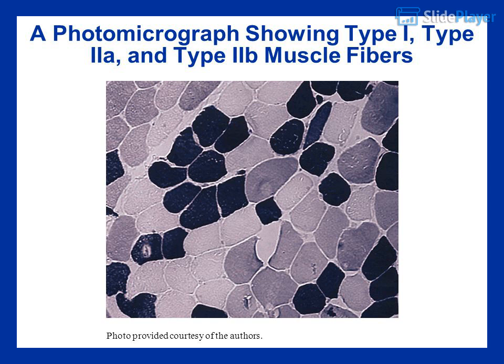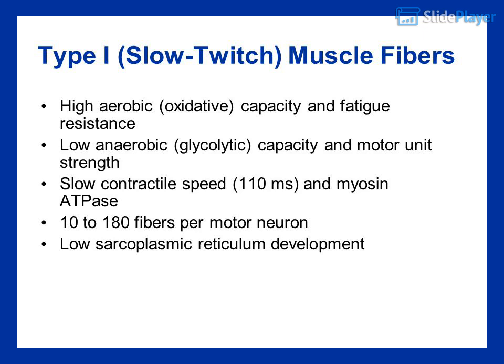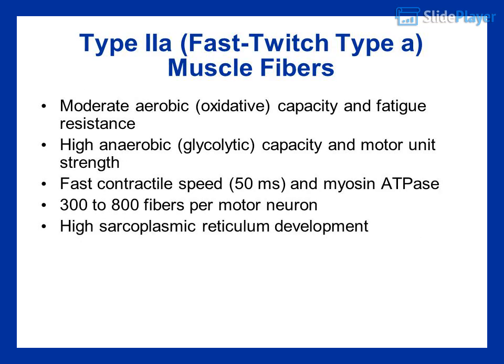Type I (slow twitch) muscle fibers have high aerobic oxidative capacity and fatigue resistance, low anaerobic glycolytic capacity and motor unit strength, slow contractile speed (110 ms), and 10–180 fibers per motor neuron with low sarcoplasmic reticulum development. Type IIb (fast twitch) muscle fibers have moderate aerobic oxidative capacity, high anaerobic glycolytic capacity and motor unit strength, fast contractile speed (50 ms), and 300–800 fibers per motor neuron with high sarcoplasmic reticulum development.